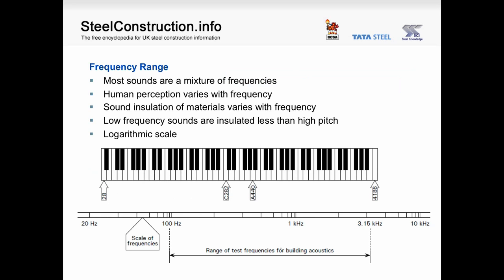Looking at frequency now — most everyday sounds are made up of a mixture of frequencies at different sound levels. The human ear is more susceptible to some frequencies than others, and sound insulation materials are usually better at insulating against some frequencies than others. It is usually the case that low frequency sounds are insulated less than high frequency sounds. The frequency scale is measured on a logarithmic scale. Sound insulation testing in buildings is carried out at a range of frequencies, typically between 100 Hz and 1.5 kHz.